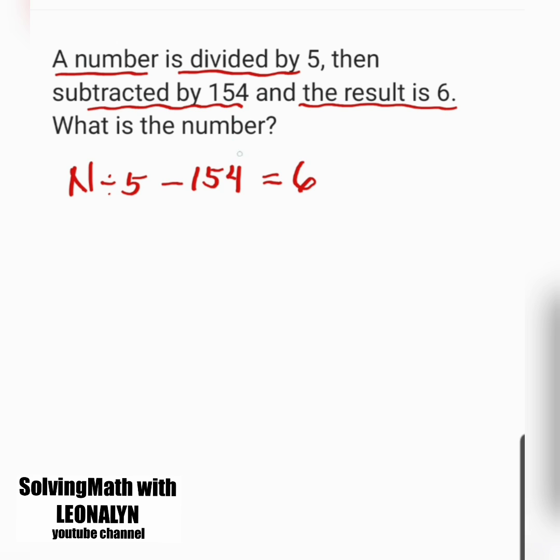Next, let's transfer minus 154 to the other side. When transferring, negative sign will become positive or plus 154. Now we have N divided by 5 equals 6 plus 154 and this is 160.